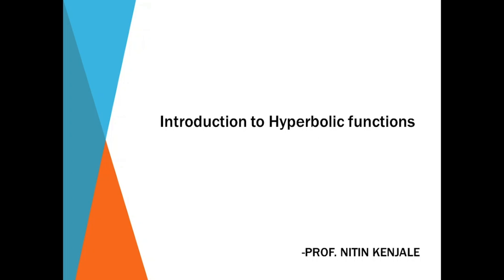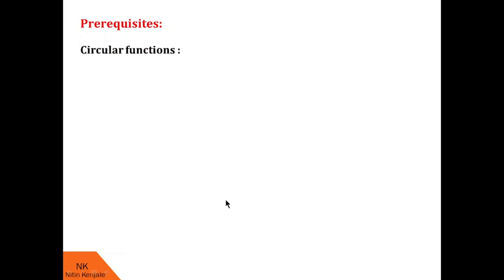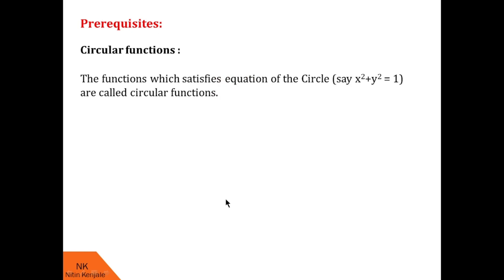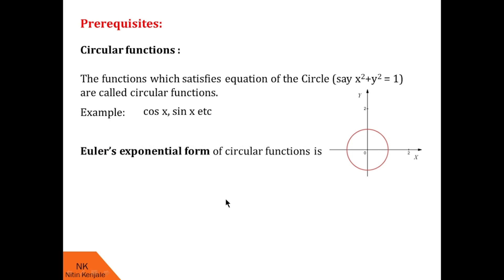First of all we will see the prerequisite. In the prerequisite we will recall the definition of circular functions and Euler's form of these circular functions. Circular functions are the functions which satisfy the equation of a circle: x squared plus y squared equals 1. For example, cos x and sin x are circular functions. Euler's exponential form of the circular function is given as: cos x equals e raised to ix plus e raised to minus ix upon 2, and sin x equals e raised to ix minus e raised to minus ix upon 2i.